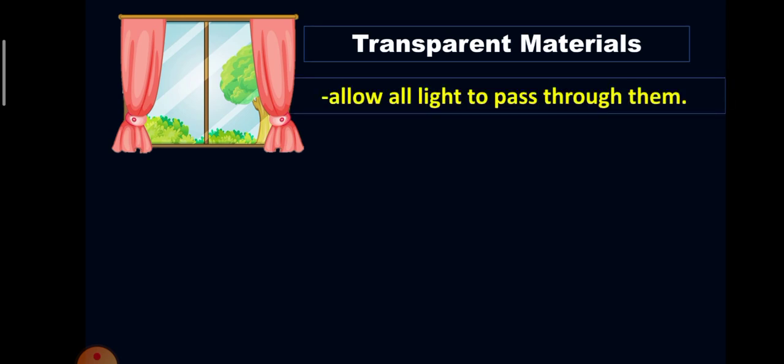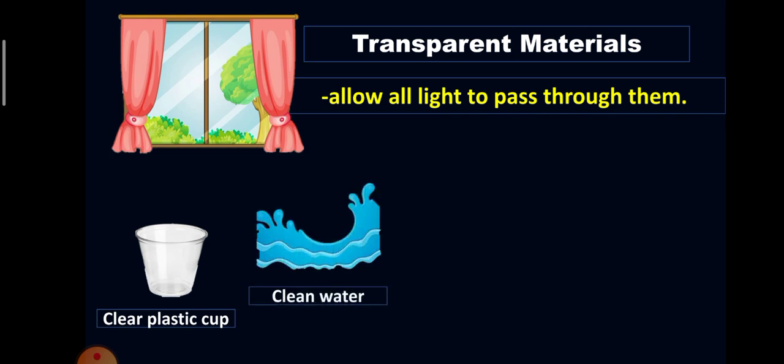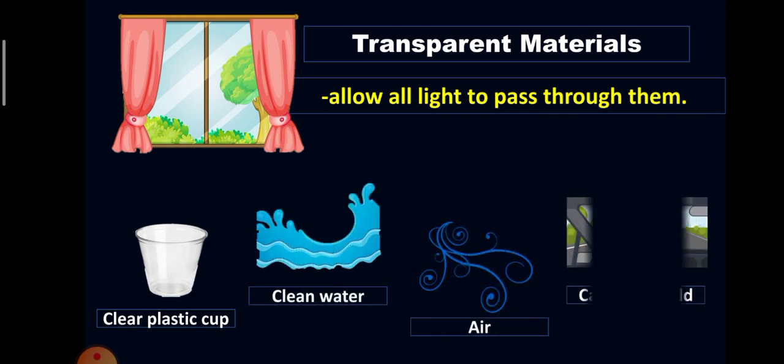Materials like the clear glass window are called transparent materials. These kind of materials allow all light to pass through them. Other examples of transparent materials are clear plastic cap, clear water, air, and car windshield.